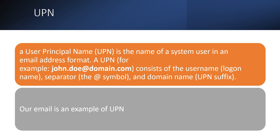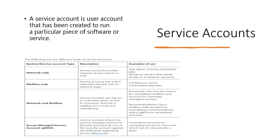Let's talk about UPN. What is UPN? UPN is User Principal Name — it is the name of a system user, generally in email address format like john@domain.com. It is a login name separated by the at symbol and domain name, so our email is generally an example of a UPN. It is typically used for user-to-service contact and is not generally used for service-to-service communication. When we go to any web page, we provide our email address and password to log in — that is user-to-service communication.